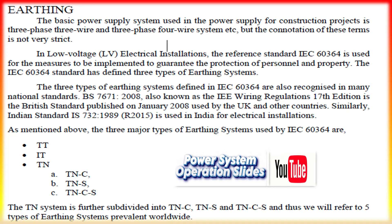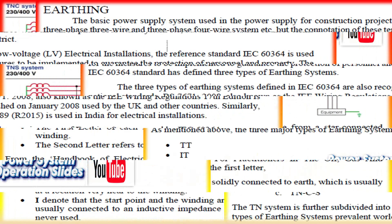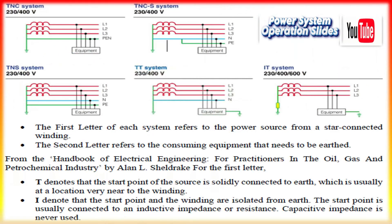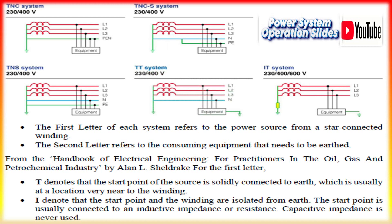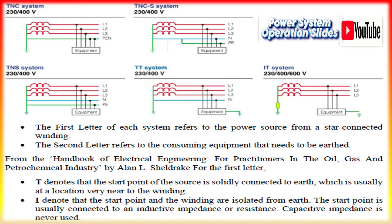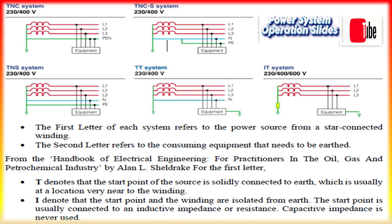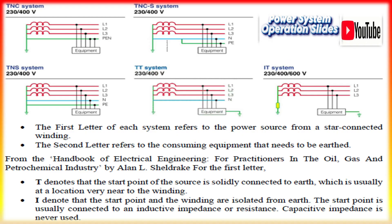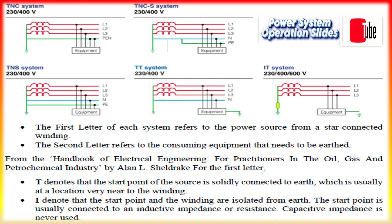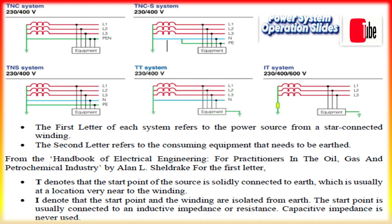In this sort of earthing system, the connection to the supply source is connected directly to the earth, and the load-end or installation metalwork is also directly connected. As a result, in the case of an overhead line, the earth's mass will serve as the line's return path. Because the power distributor only offers the supply neutral or protective conductor for the connection to the consumer, the neutral and earthing conductors must be separated during the installation.